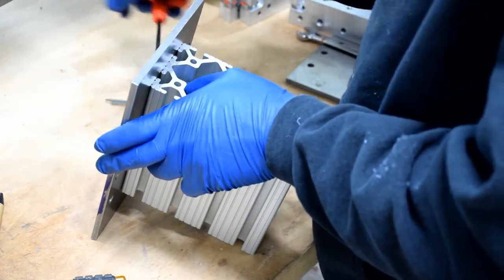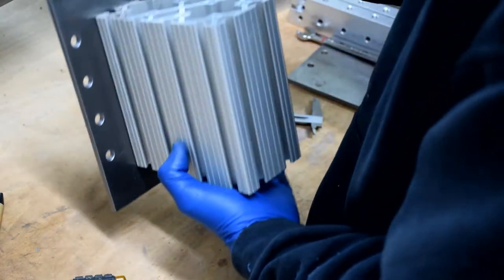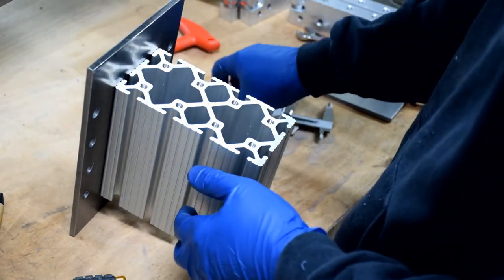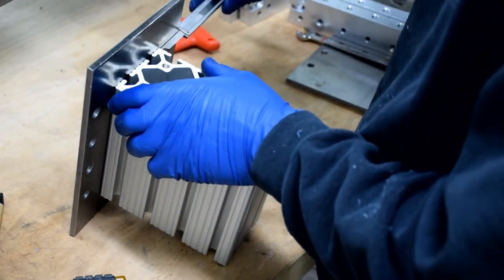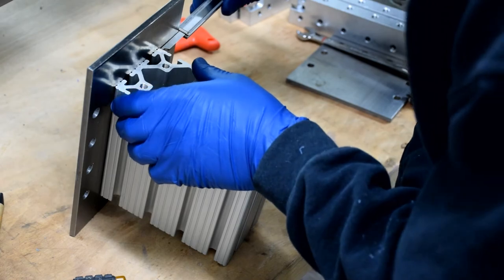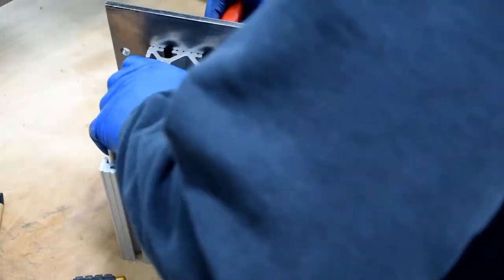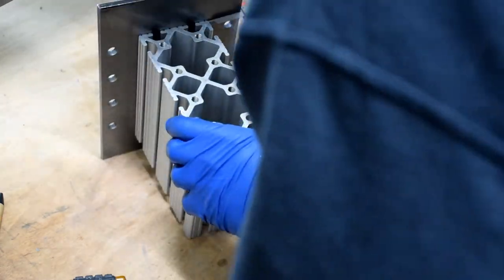Once you're satisfied with the position, tighten one of the screws down with your hex wrench. Flip the piece over and repeat on the other side. When you're happy, tighten down all your screws and check your measurements again.